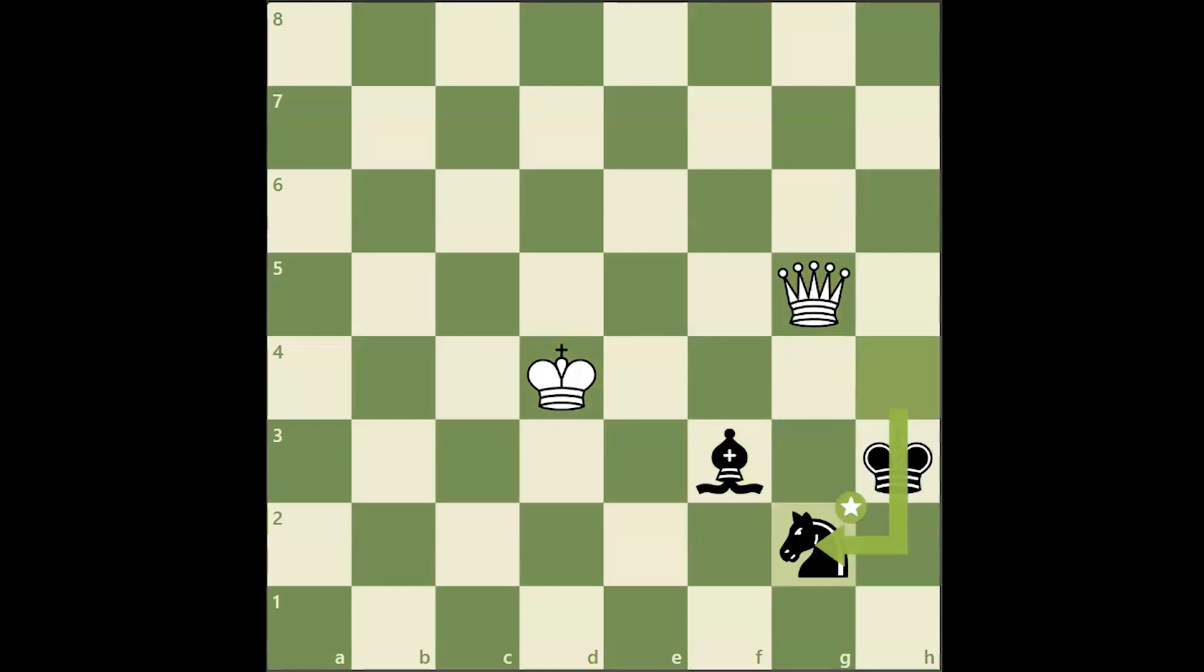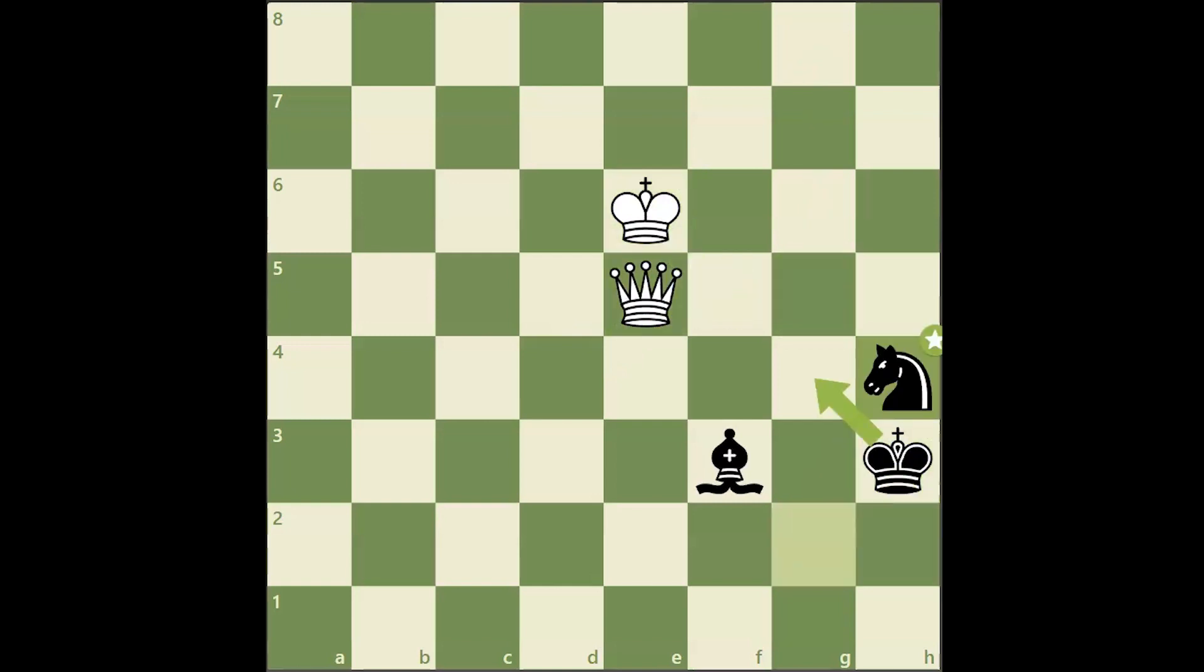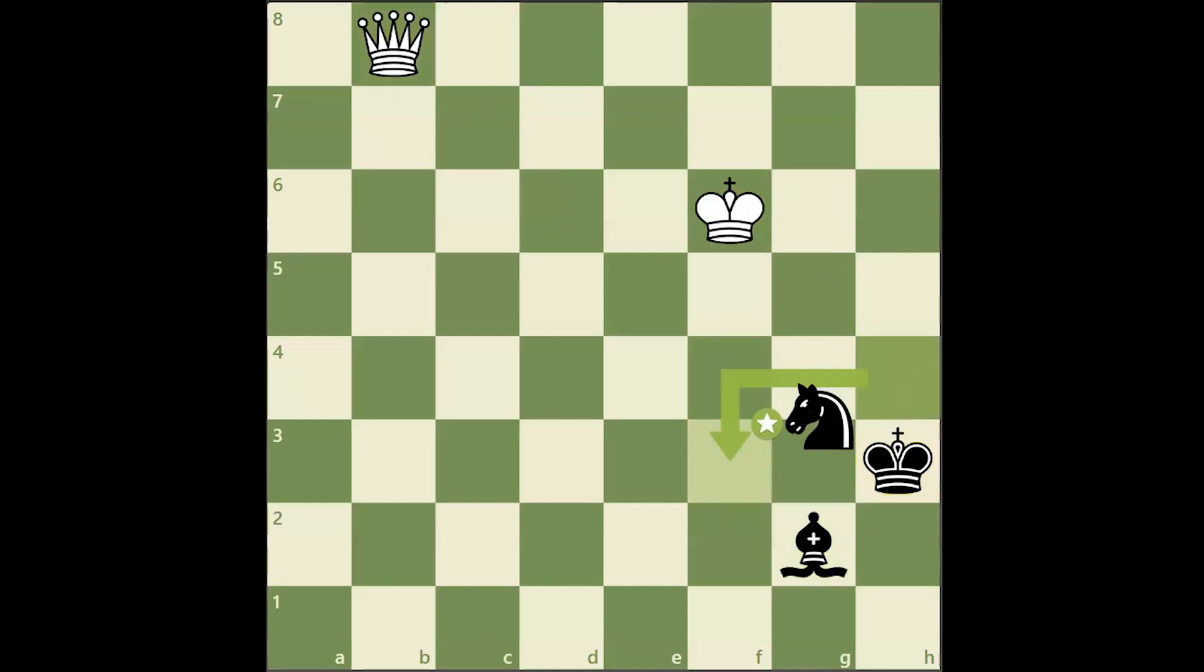A very important thing to remember is to not allow black to set up a fortress with the knight and the bishop, and this can be achieved by preventing the enemy king from reaching the corner with your queen.